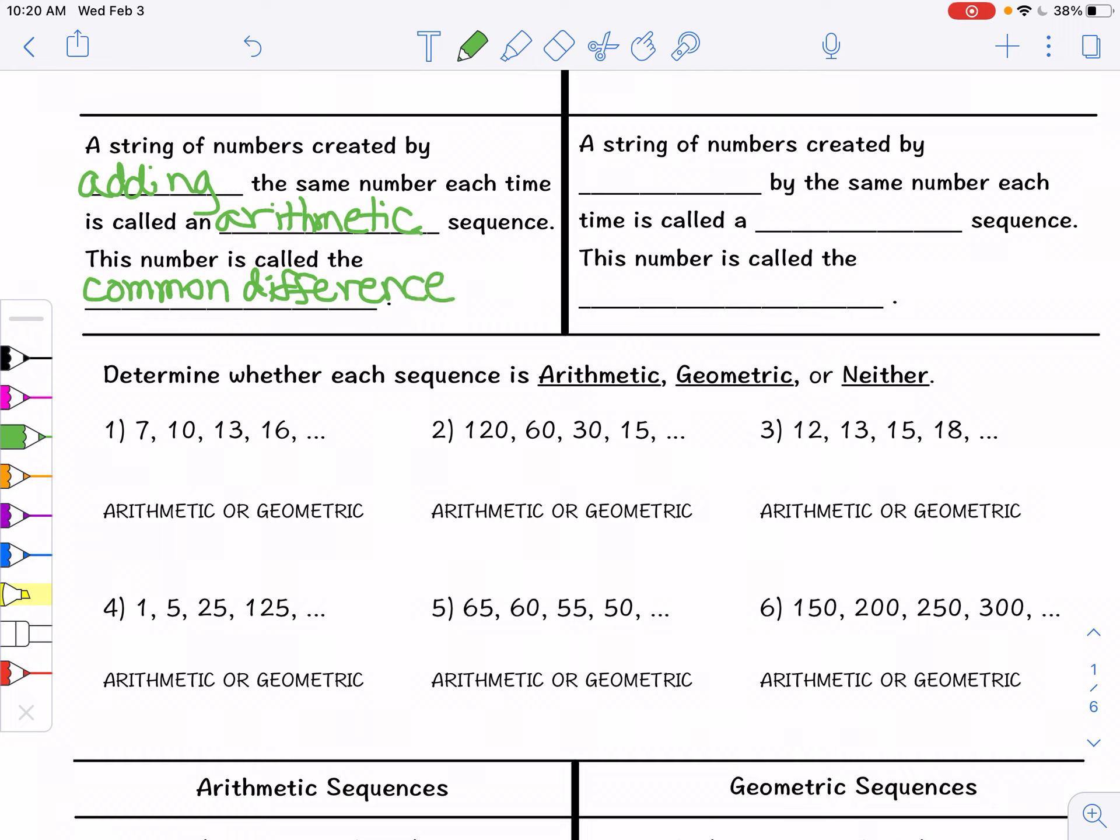A string of numbers created by multiplying by the same number each time is called a geometric sequence. The number that we use to multiply every time is called a common ratio. The reason we say multiplying is because even if we're dividing you could always multiply by a fraction. So you can always multiply by the reciprocal. Dividing by 2 is the same as multiplying by 1 half. Divide by 3 is the same as multiplying by 1 third.